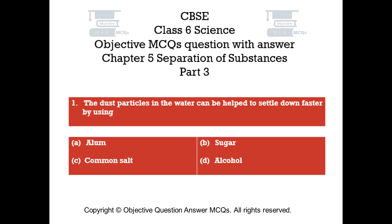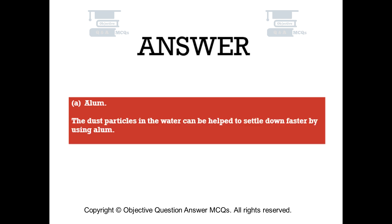Question number 1. The dust particles in the water can be helped to settle down faster by using. Option A: Alum. Option B: Sugar. Option C: Common Salt. Option D: Alcohol. The right answer is Option A — Alum. The dust particles in the water can be helped to settle down faster by using alum.